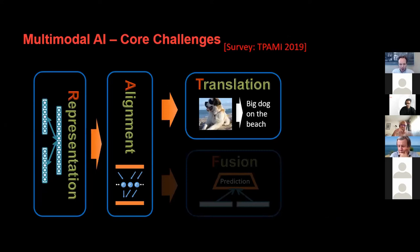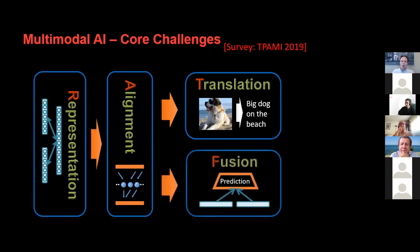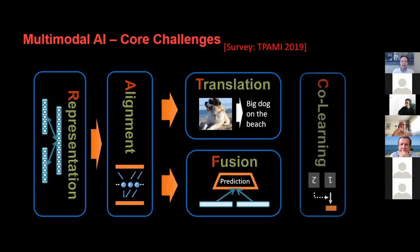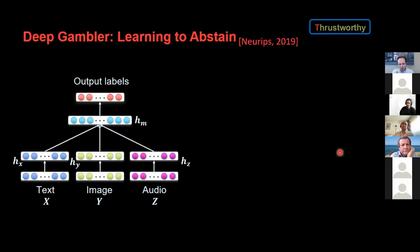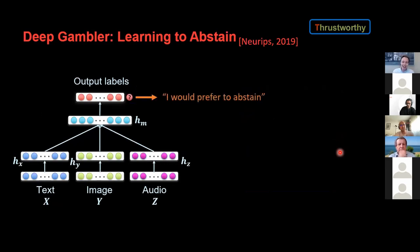To summarize: we talked about representation and its robustness, alignment and trustworthy technologies, and translation and modeling variability. Fusion is an important aspect where modalities come together to predict, and there is also the challenge of co-learning when one modality helps the other. The challenges are not just core technical challenges of multimodal, but also real-world ones. I believe in AI that is able to tell you 'I prefer to abstain — I just don't know,' rather than always being forced to make a prediction.